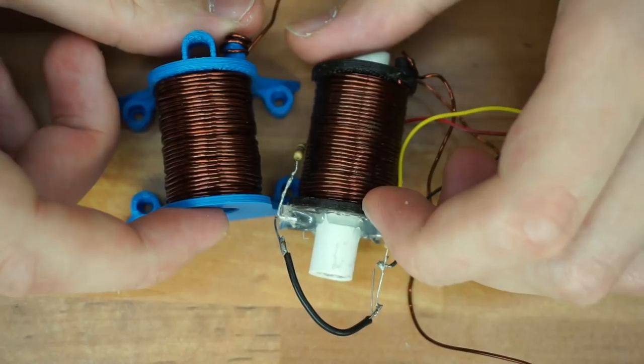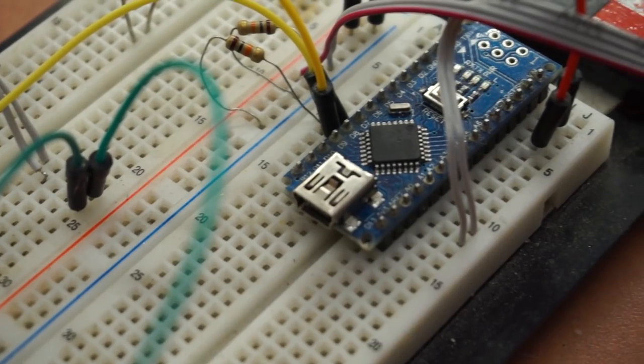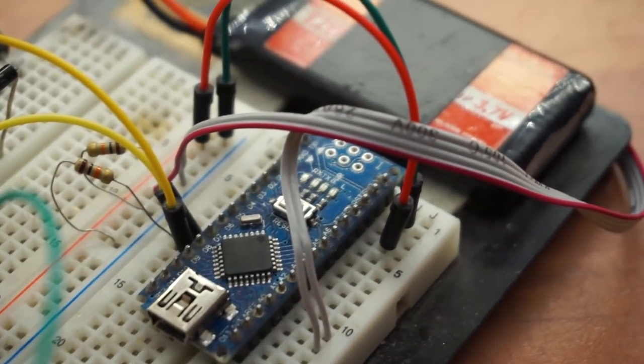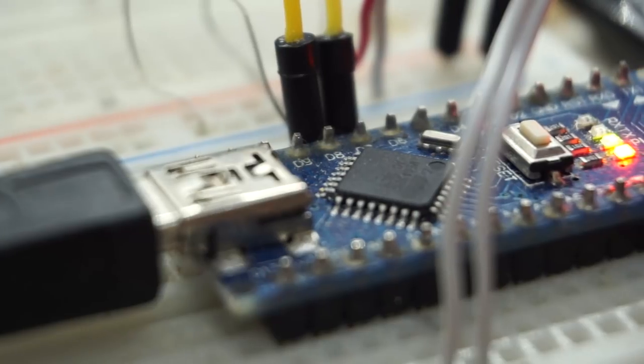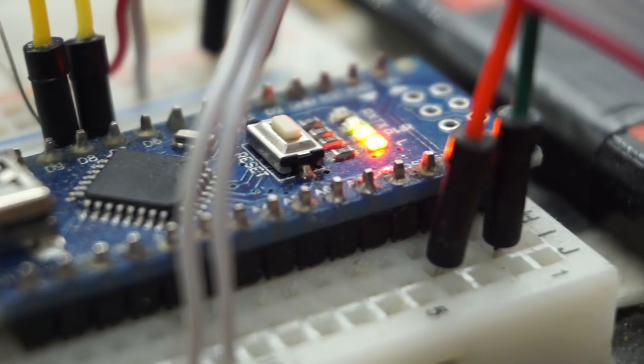The brain of this project, apart from me of course, is an Arduino Nano. That allows a lot of flexibility during prototyping. It really just turns the coil on and off and has some safety features programmed into it.